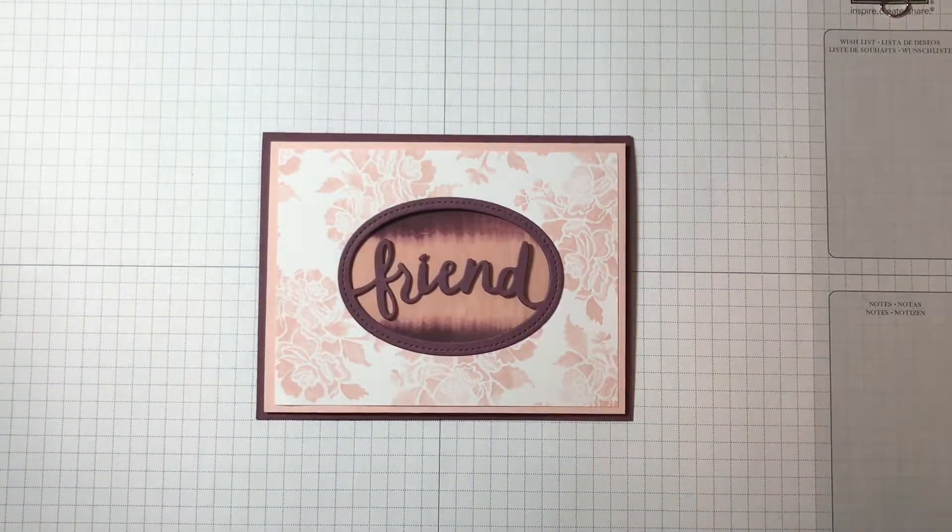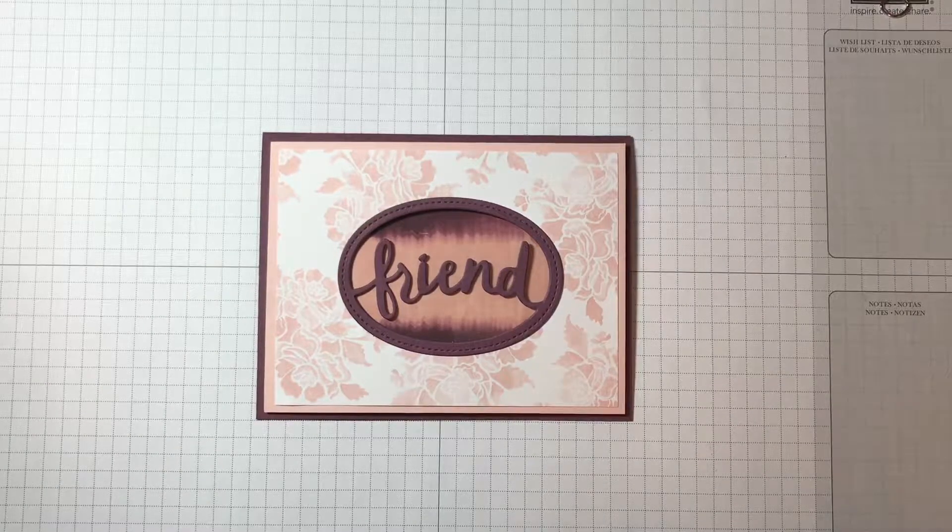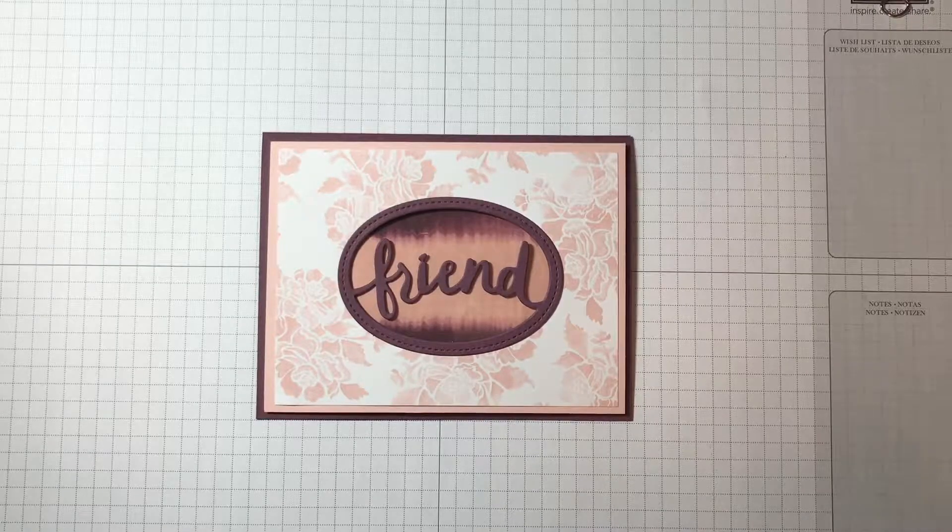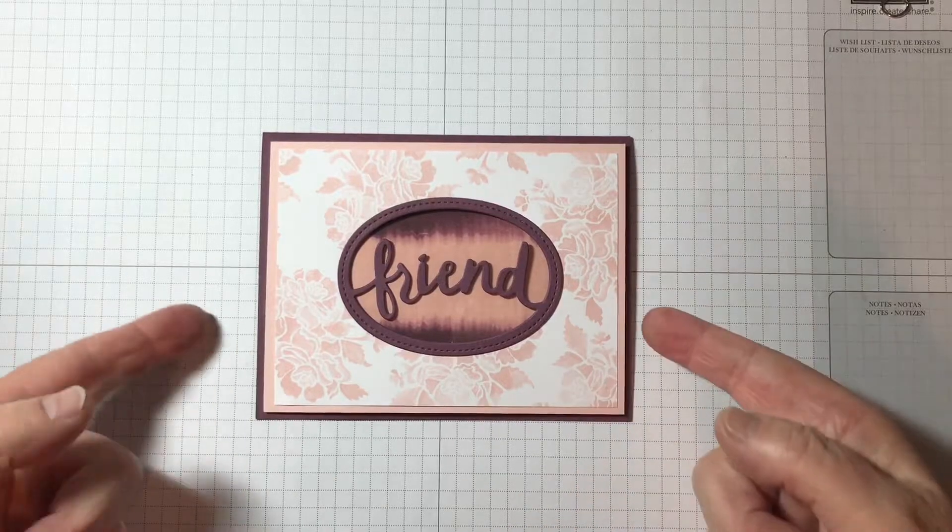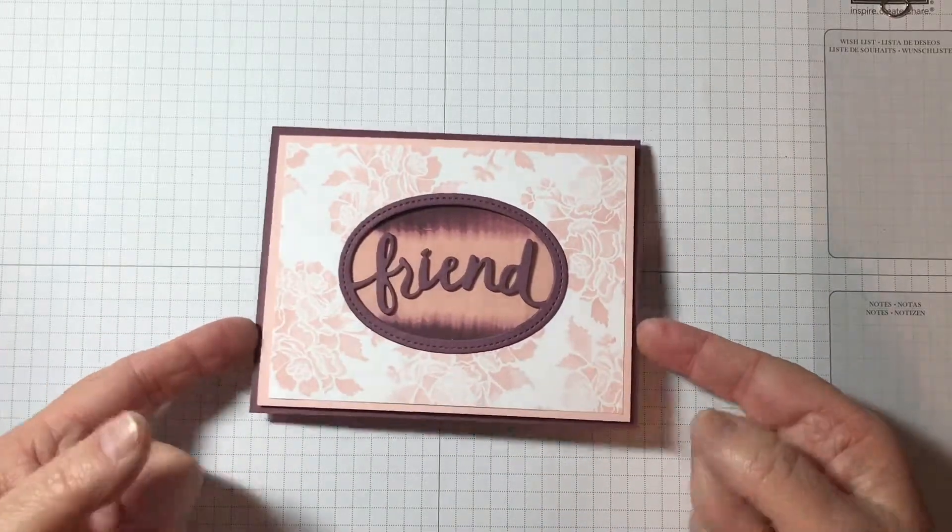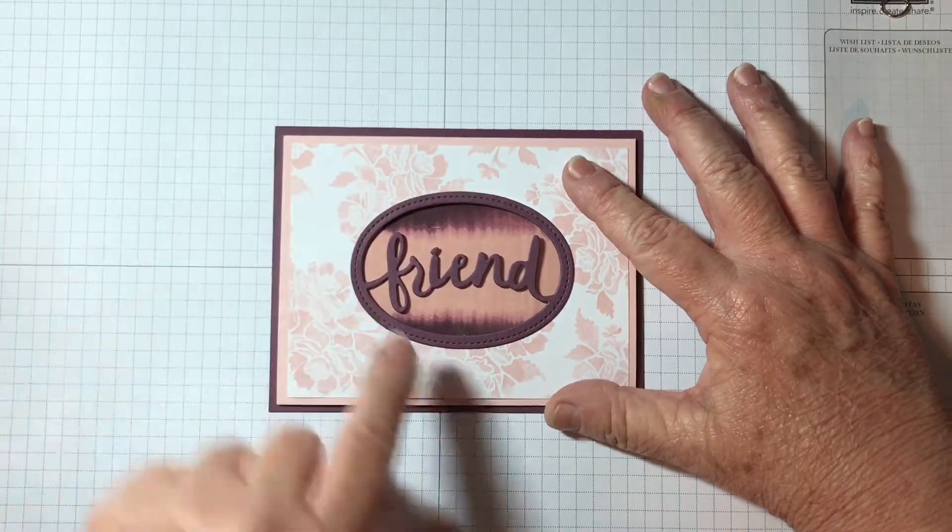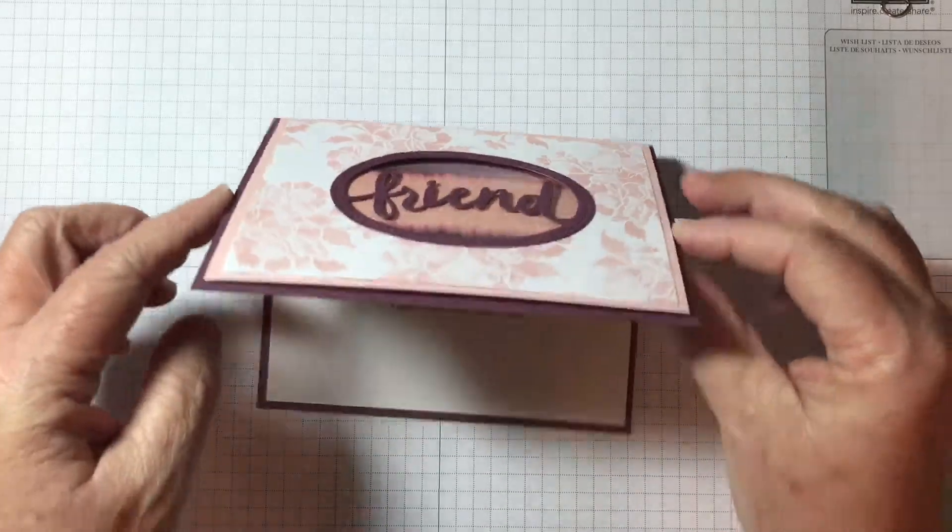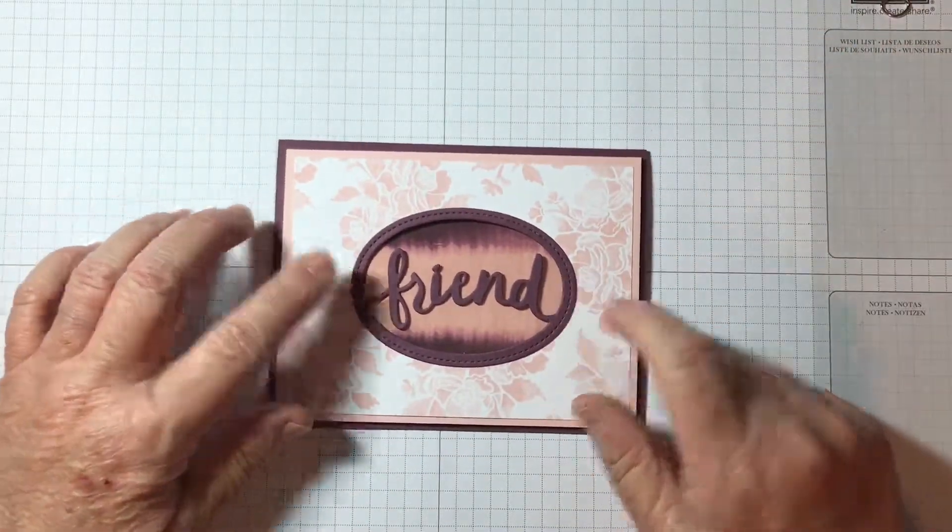Hi, welcome to Let's Stamp with Fellas. Thanks for tuning in today. I have another exciting project for you featuring two of the new 2017-2019 in colors: powder pink and fresh fig. They absolutely look beautiful together. When we do this card, we're going to do this technique in here with re-inkers. And here is the inside of the card. So let's go ahead and get started and I'll show you how we do this.